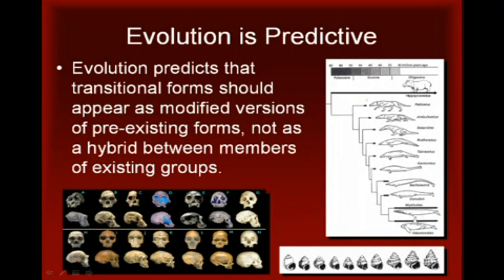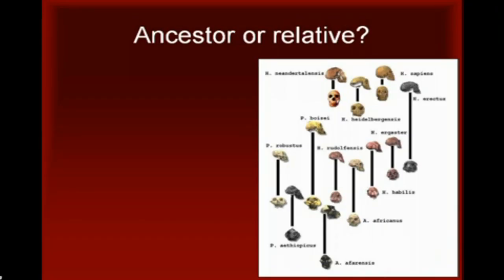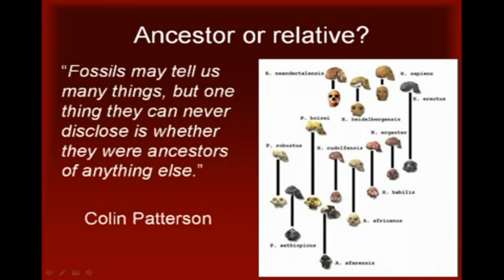Before we look at some examples of actual intermediate forms, it is important to clear up one other misconception. It is sometimes argued that a fossil specimen cannot be considered an intermediate form unless it has been shown to be the direct ancestor of an existing species or group of species. This argument sets up an impossible task because, in the words of paleontologist Colin Patterson, fossils may tell us many things, but one thing they can never disclose is whether they were the ancestors of anything else. Those who make this argument often do so precisely because they know that it is impossible to definitively determine ancestry based solely on fossil evidence. Any proposed transitional fossil could therefore be disputed on these grounds.